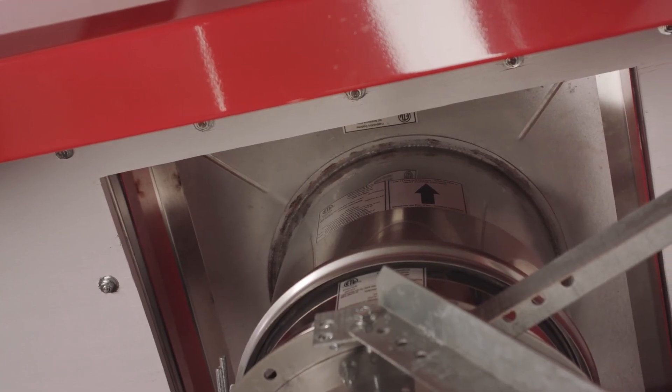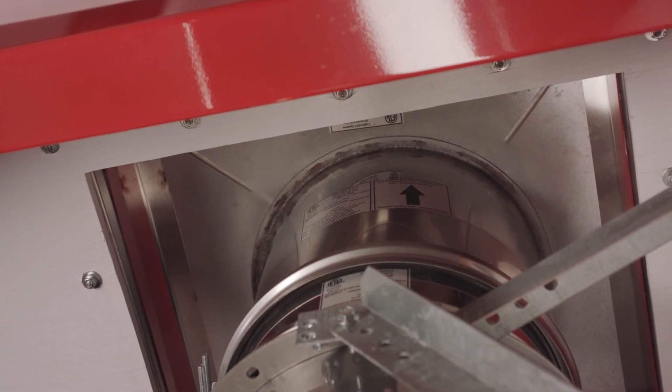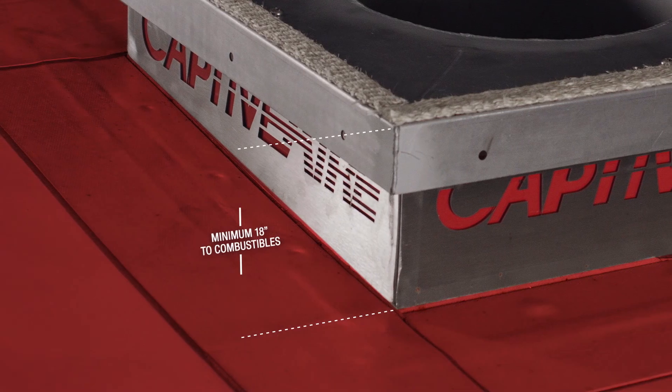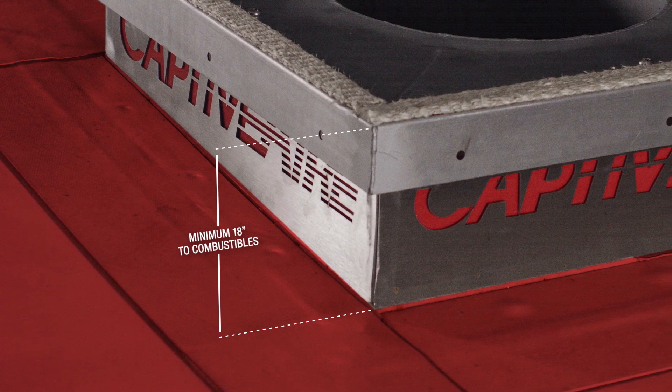The curb and transition plate combination can be attached to non-combustible and combustible surfaces. But the transition plate must always be at least 18 inches above combustible surfaces.